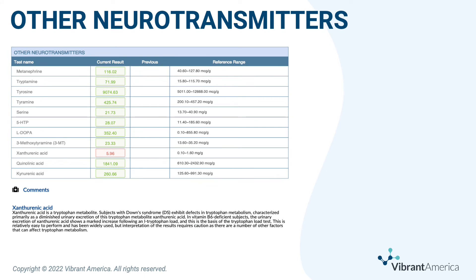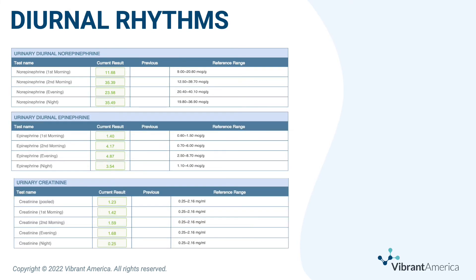This next page of the report shows details about other neurotransmitters, which include many metabolites for neurotransmitters, trace monoamines, and kynurenine pathway markers. The next page of the report shows the specific levels for diurnal rhythms at each point in time for norepinephrine, epinephrine, and creatinine.